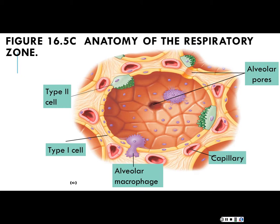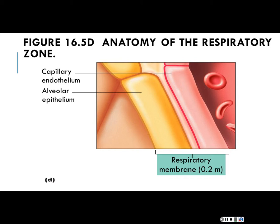The pores are like doors from one alveolus to another, equilibrating pressure between the little alveoli. Looking at figure 16.5, the relationship between a type 1 cell and a pulmonary capillary cell: on one side is the alveoli lumen, on the other side is the blood plasma. What's referred to as the respiratory membrane is very thin — about two-tenths of a millimeter — to enhance diffusion of gases and minimize the distance gases must travel.